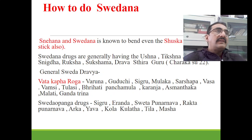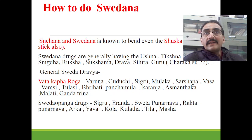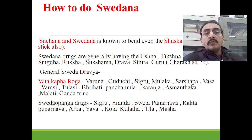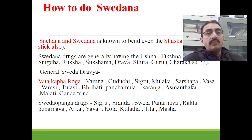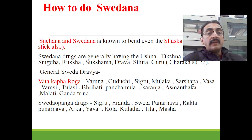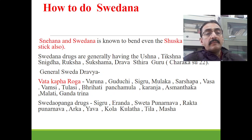Generally swedhana drugs are best for vata-kapha jarogas because sthambha and gaurava can be caused by both kapha and vata. The drugs having vata-kapha hara property include varuna, kuduchi, shigru, mulaka, sarsapa, vasa, vamsi, tulasi, brihati, panchamula, karanja, ashmantaka, malati, and ghandatrana etc.